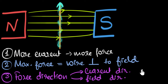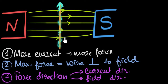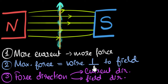So, what did we learn in this video? We learned that a current carrying wire placed in a magnetic field experiences a force, and using this, we can convert electricity to motion. We learned that more current means more force, and that the force is maximum when the wire is kept perpendicular to the direction of the field.